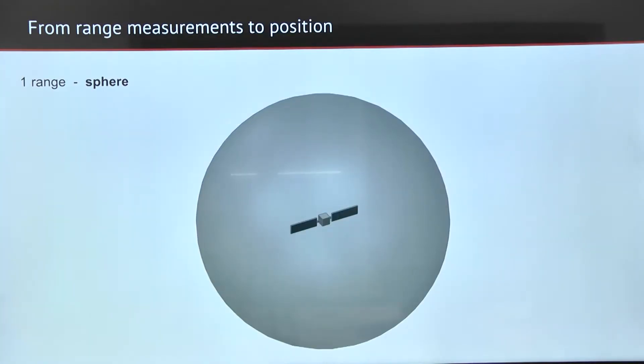But how is the position calculated? If we measure just the range from one satellite, we can be anywhere around it on a sphere.